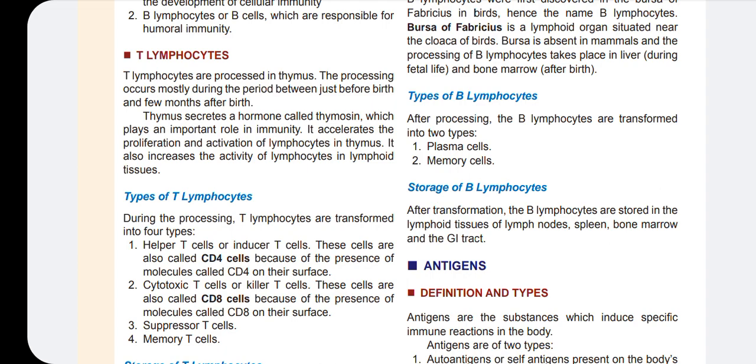Third are suppressor T-cells — they suppress or reduce the immune response. Fourth is memory T-cells. Memory T-cells are very important.